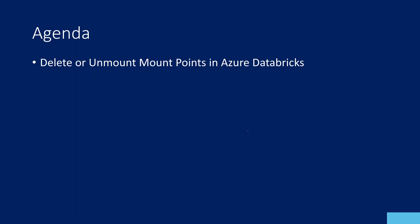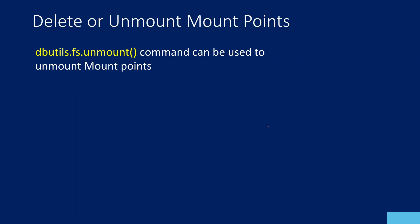So what is a mount point? A mount point is a point created on your cluster through which you attach some external storage. Once you create that mount point and attach your external storage with the cluster, you can access that storage very easily as if you are accessing a local file system. In this video, let's assume I created a mount point — how do I delete that mount point if I don't want it anymore?